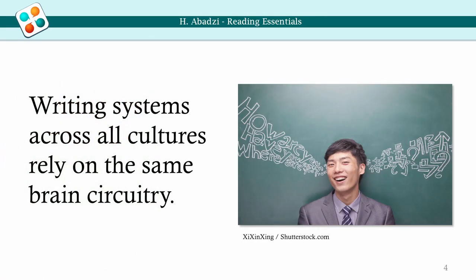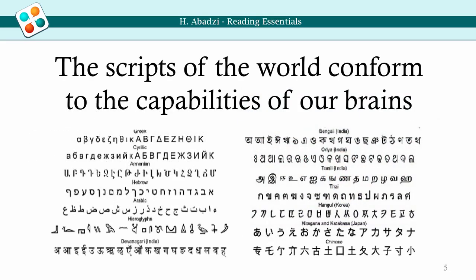The writing systems across all cultures rely on the same brain circuitry. In every case, a substantial amount of information must be packed in such a way that readers get maximal semantic and sound cues through minimal orthographic units. Writing systems did not evolve arbitrarily, but were gradually optimized in ways that fit the human cognitive system.